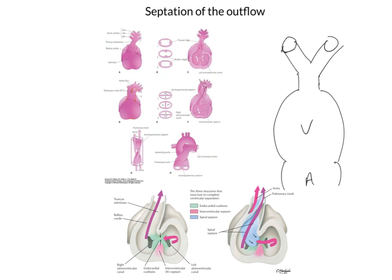This process also does involve the septation of a portion of the ventricle, but the beautiful thing about the septation of the outflow tract is that it involves a spiral or helical septum which forms within the truncus. And combining that with the interventricular septum means that blood is then partitioned into the aorta on the left and the pulmonary arteries on the right.